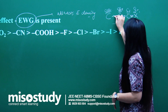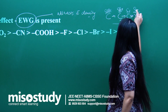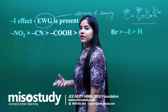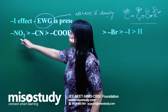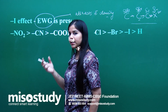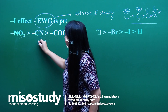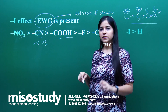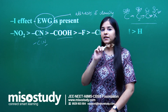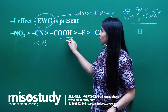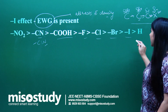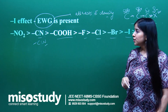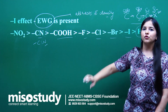Groups exhibiting the minus I effect include NO2, which is highly electronegative due to three electronegative atoms; cyanide (C≡N); the carbonyl group (C=O), where the carbon is slightly delta positive and thus electron-attracting; all halogens; and finally H⁺. These are the main electron withdrawing groups to remember.